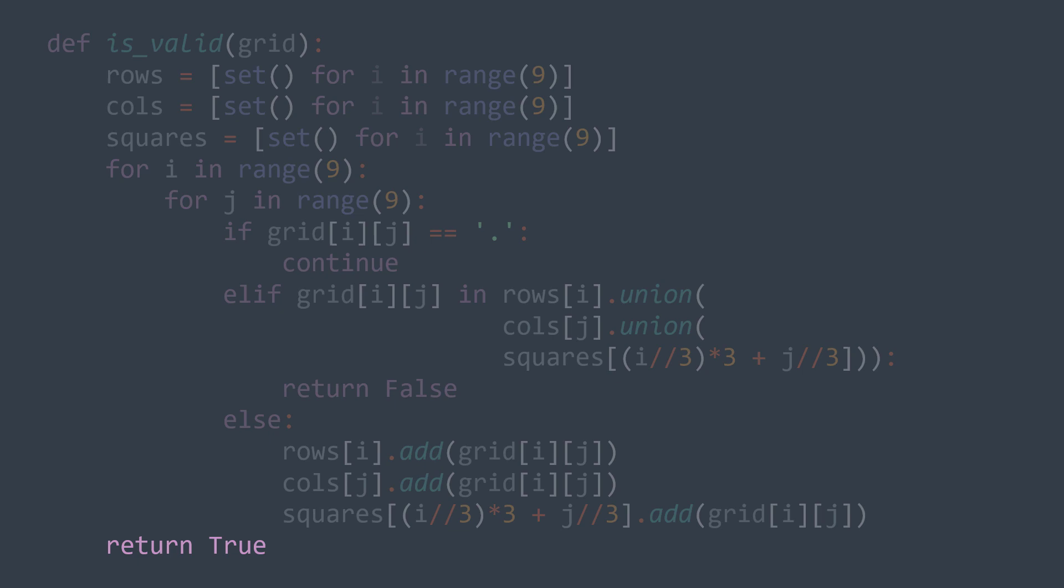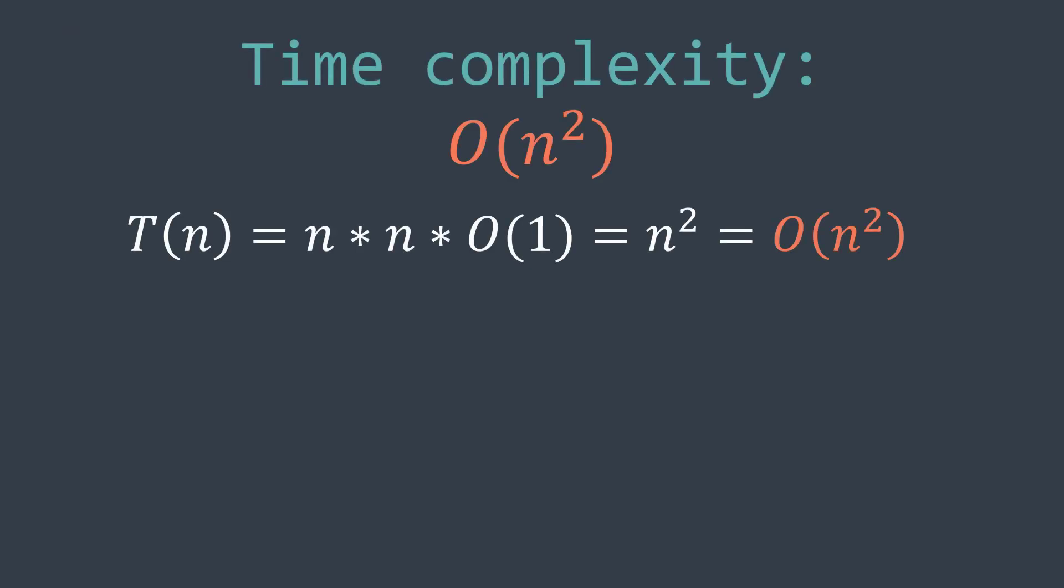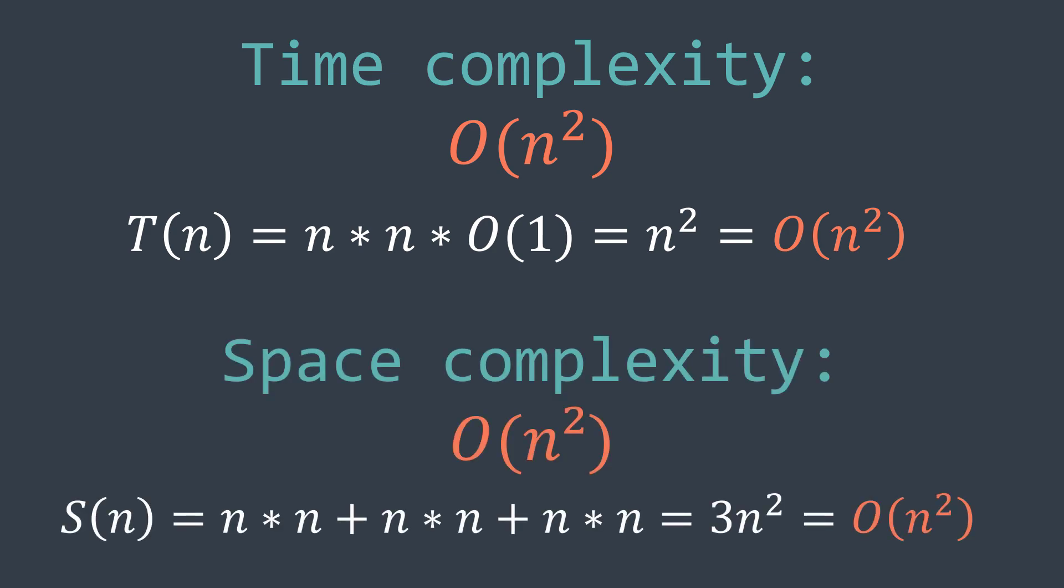And this solution has an O(n²) time complexity because traversing the grid requires n² iterations, and searching in a set has an O(1) time complexity on average. And for the space complexity, we're using 3n sets that can contain up to n elements, so it's also n². This is the end of this video. Like and subscribe to the channel, and see you in the next one.